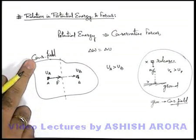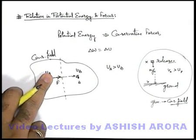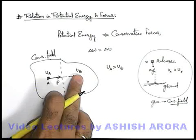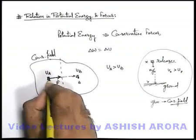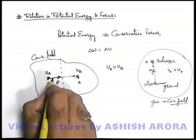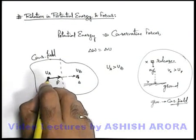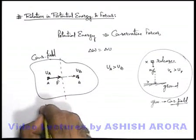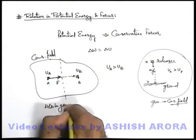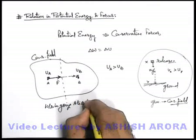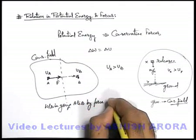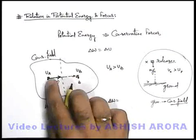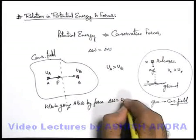Similarly, in any conservative field, when you release a body from a position it will always experience a force in the direction where the potential energy of the body is decreasing. When the body moves from point A to point B, this force will do work. Whatever work is done in bringing the body from A to B equals the loss in potential energy. So work done going from A to B by the force equals U_A minus U_B.